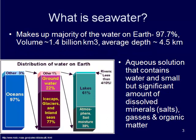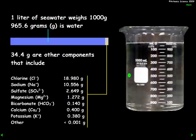To talk about what seawater is: if you took all of the water on the planet and divided it up between fresh water and water in the oceans, only 3% of the water on the planet is not in the oceans. The oceans contain 97.7% of the water on Earth, which is about 1.4 billion cubic kilometers. The deepest parts are about 4.5 kilometers in depth. Seawater is essentially an aqueous liquid solution containing water and small but significant amounts of dissolved minerals, salts, gases, and organic matter.